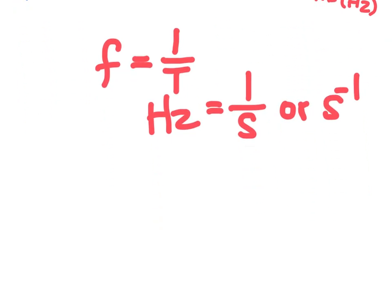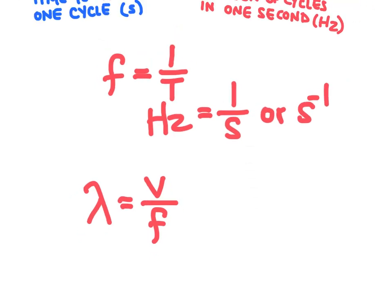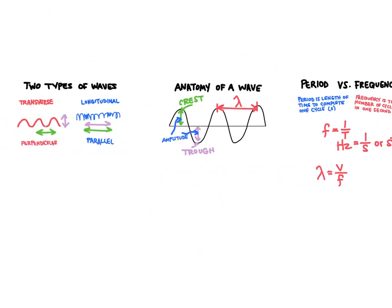And then finally, we can find the wavelength if we know the frequency by using this equation we like to call the wave equation. It works like this: the speed of a wave or velocity of the wave divided by the frequency of the wave is going to be equal to the wavelength. In the next video, we'll learn how to use this wave equation to solve problems. And that is a wave.